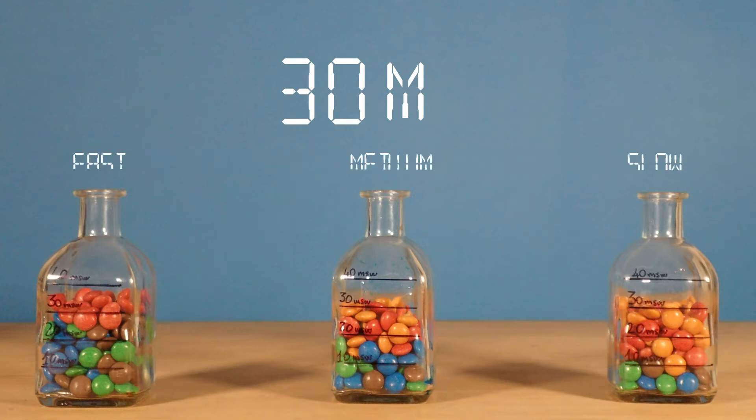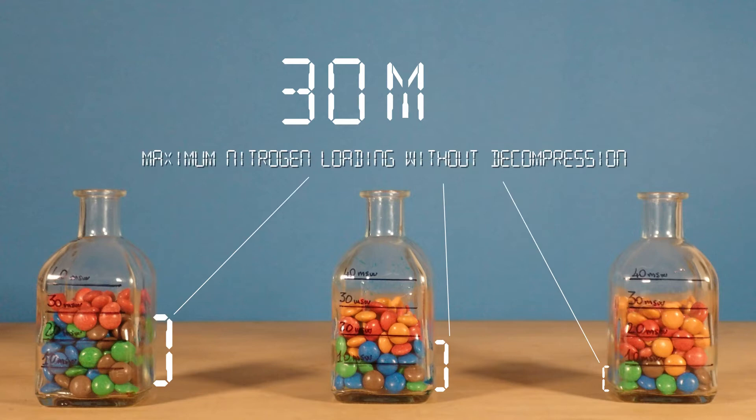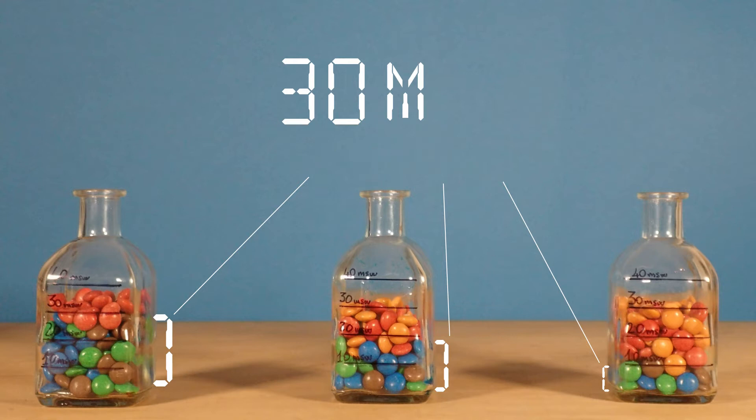The rate of nitrogen uptake of each compartment is defined by its halftime in minutes. The maximum amount of nitrogen each compartment can tolerate without the need for decompression is defined by its M value, also known as allowable nitrogen loading, and it's measured in meters or feet.